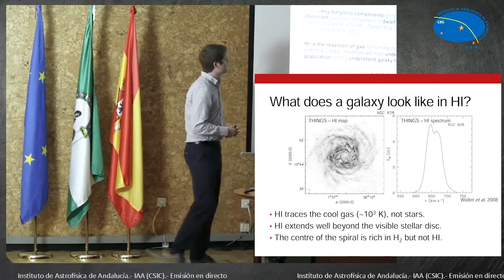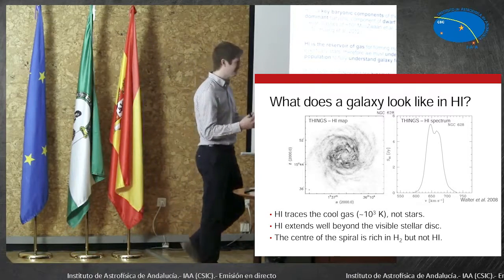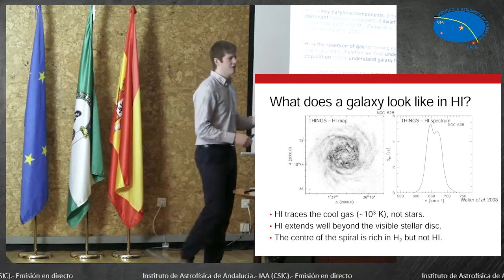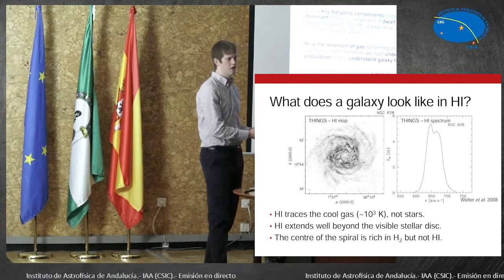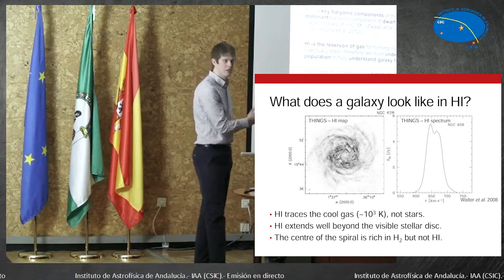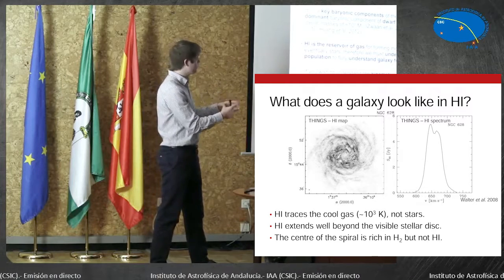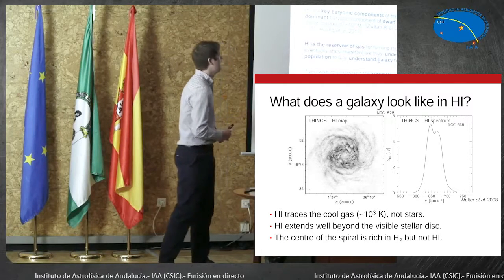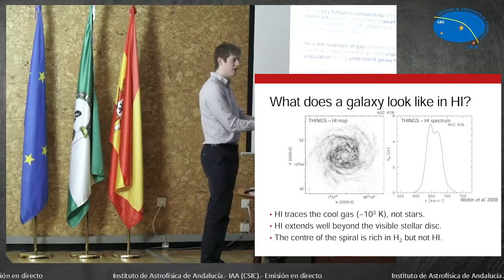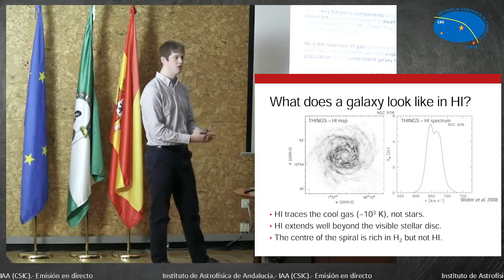Why should you want to study H1 in an age where we have SDSS, Pan-STARRS, Dark Energy Survey and all of these things? The reason is that all of those surveys basically trace the starlight of galaxies, which is a completely different component to the H1. If you're interested in the smallest galaxies in the universe — dwarf galaxies in the field — their baryonic mass is dominated by H1, not stars. This gas is the reservoir that a galaxy has, that will eventually collapse into H2 and make stars, and that's all part of the process of galaxy evolution. So if you want to understand how a galaxy evolves, you have to understand the gas.